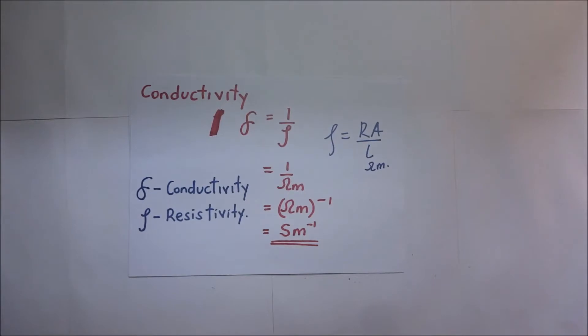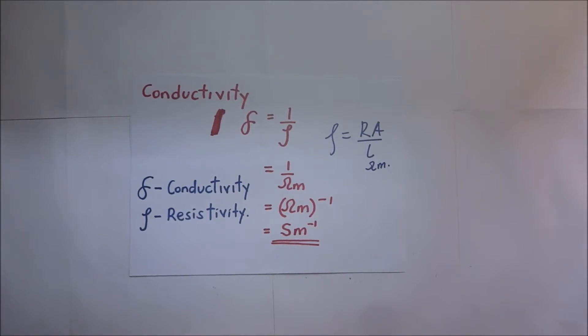Electrical resistivity, or specific electrical resistance, or volume resistivity, serves to quantify how strongly a given material opposes the flow of electric current. The units are in ohm meters. A low resistivity means the material readily allows for flow of electricity.